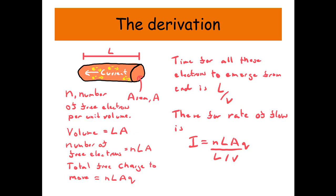So we know I equals Q over T. So we found out that big capital Q, the total charge, is equal to N, L, A, Q. Divided by the time taken for these electrons to leave is going to be L over V.